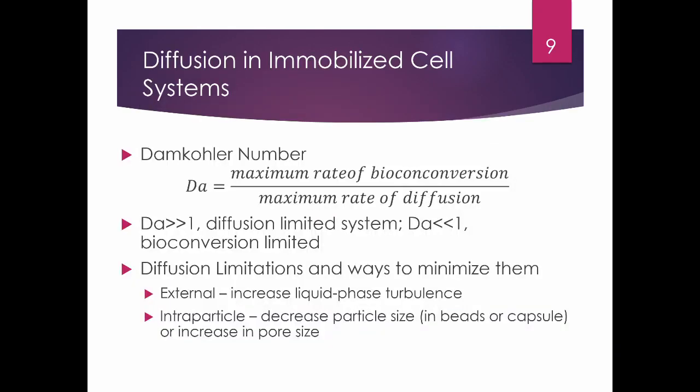For diffusion in immobilized cell systems, you need to consider the Damköhler number, which is the ratio of the rate of bioconversion to the rate of diffusion. The Damköhler number tells you whether you need to increase or decrease your diffusion. If it is much greater than 1, it is a diffusion-limited system, meaning your cells are consuming your substrate faster than the substrate can enter the encapsulated layer.